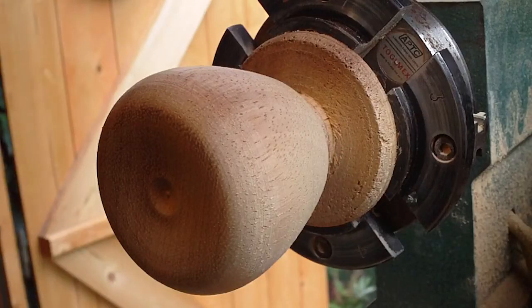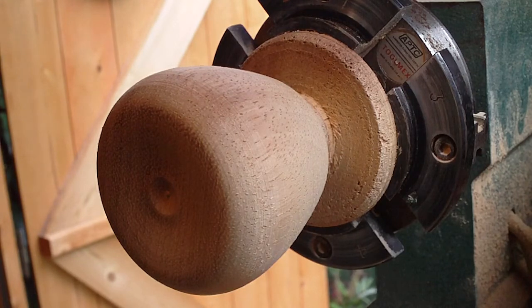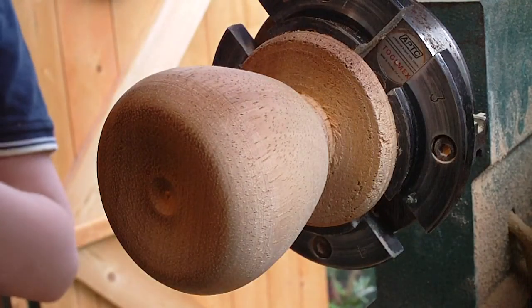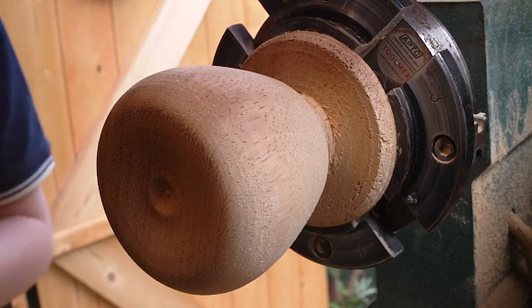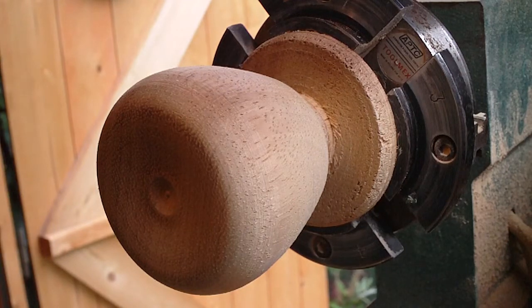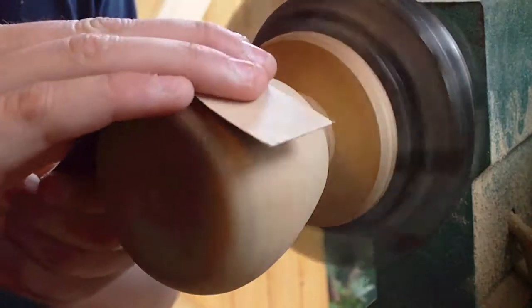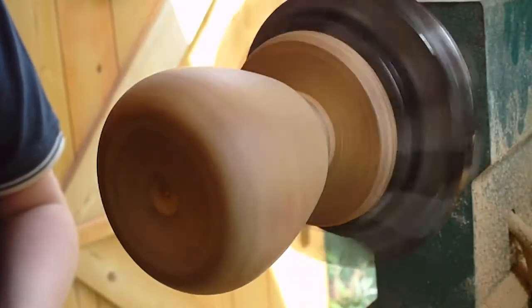Okay now I think it's time for sanding, so I'll get my sheets of sandpaper I bought here from Amazon, and I'll start at 120 grit and go all the way up to, I'm not sure at the moment, it depends. So this is starting off with 120, now I'm going to move to 320.